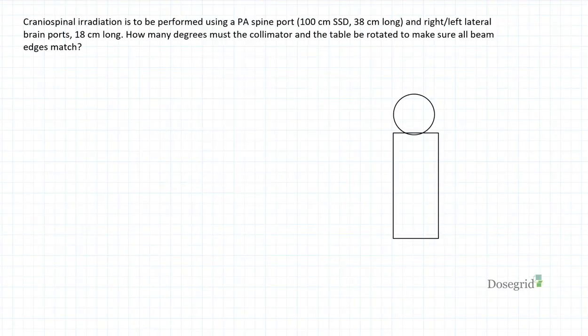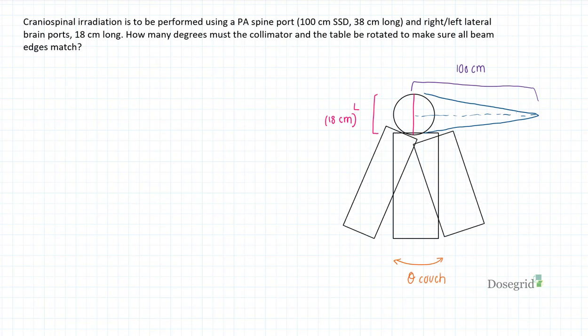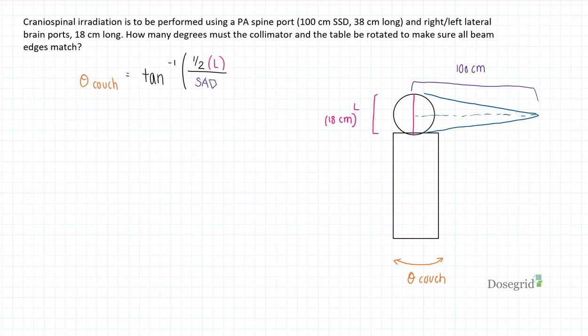Then, for the couch divergence, draw another diagram. We have an SAD of 100 cm and a brain port length of 18. The couch is the inverse tan of one-half the length of the brain field, or 18 cm, divided by the SAD, 100 cm.